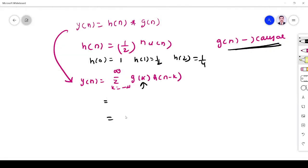you take only positive value. So it is summation k equals 0 to infinity, g of k and h of n minus k. y of n.